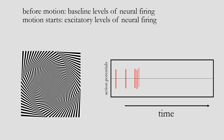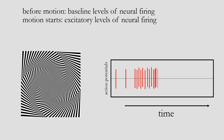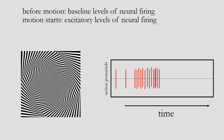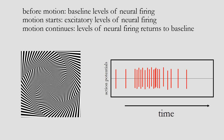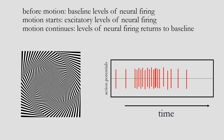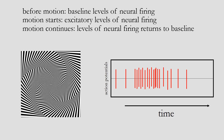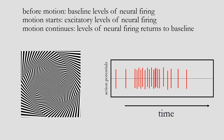Once motion starts — once you see movement in the world around you — those neurons start firing to let you know something is moving and you should pay attention to it. But as that movement keeps going and keeps going, those excitatory responses from those neurons will eventually start tapering off. Because your sensory system is good at detecting changes, and if there's constant movement, that's no longer really a change — it's just the constant state of things now.